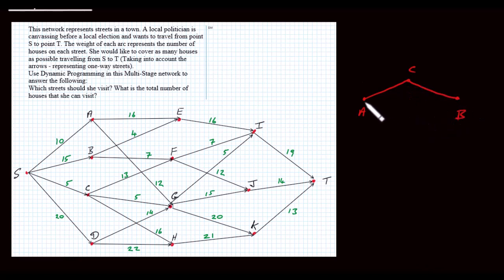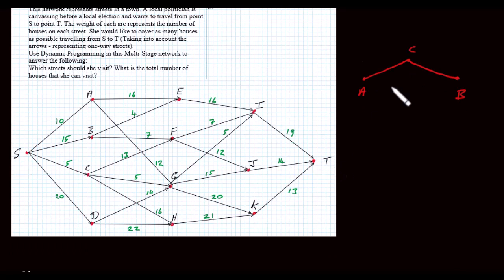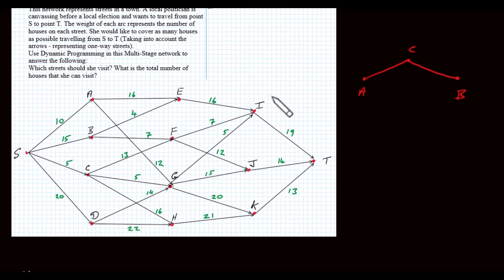So if route A→C→B is the optimal route from A to B, then the optimal route from A to C is this one, and C to B is this one. Now let's look at this particular network. This network represents a series of roads, and we have a politician who wants to get from S to T by following these arrows — these represent one-way streets — and she wants to canvas as many houses as possible. The numbers, the weights of each arc, represent the number of houses on each street. So we have a multi-stage network here.